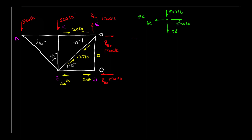Let's look first in the X direction. The summation of forces at C in X has to equal zero. I've got a minus AC plus a positive 500 pounds, which has to equal zero. Therefore AC is equal to 500 pounds, and by my diagram it's pulling to the left. Let me go ahead and update my master diagram — 500 pounds pulling in. That makes perfect sense. I'll write that up in green.